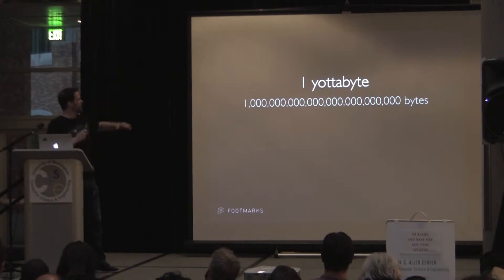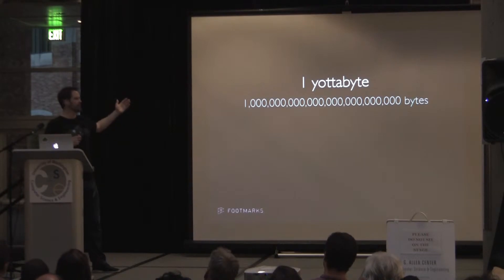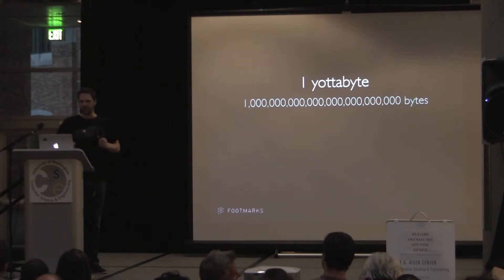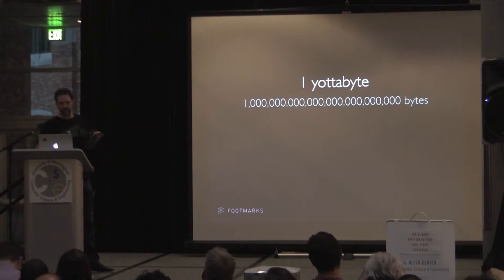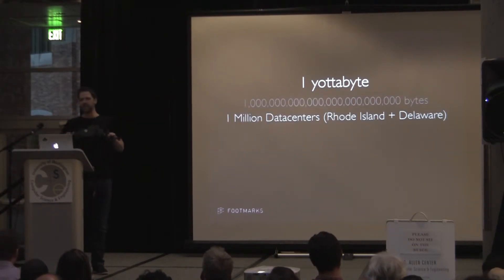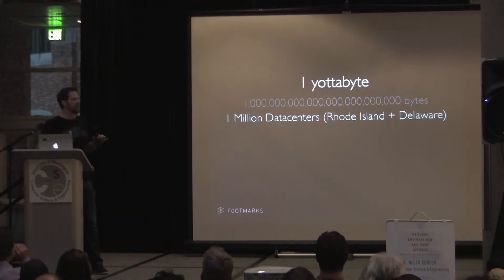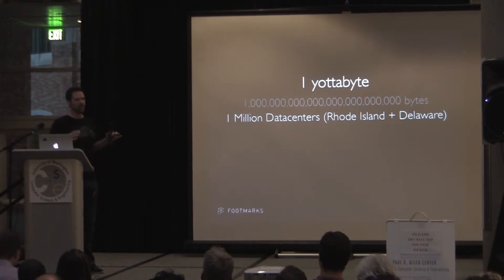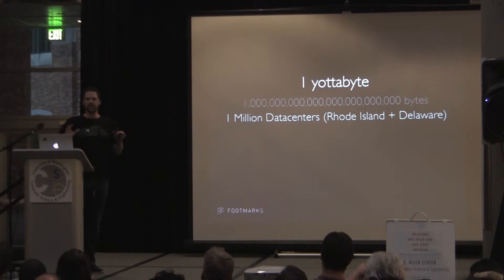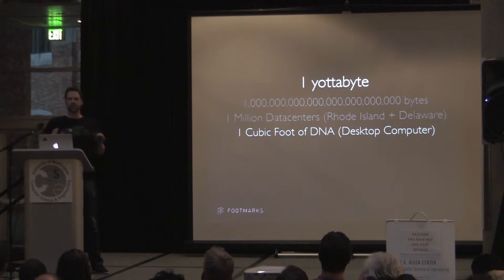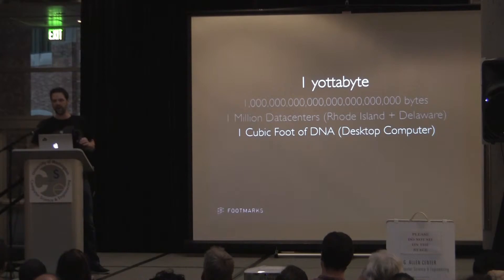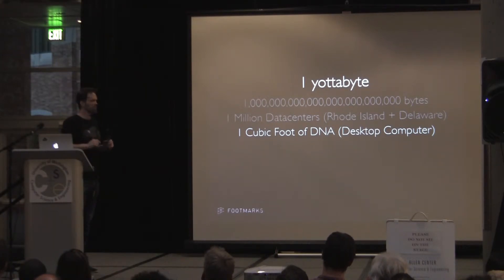Just for fun, above and beyond a zettabyte is a yodabyte. A yodabyte was named after Yoda from Star Wars. It's one with a lot of zeros behind it — a massive amount of data. It can be looked at as over a million data centers that would encompass the entire states of Rhode Island and Delaware. That's how much space would be needed with today's hard drives to store one yodabyte — or alternatively, one cubic foot of DNA. Each and every one of us stores more data in our bodies than one yodabyte.